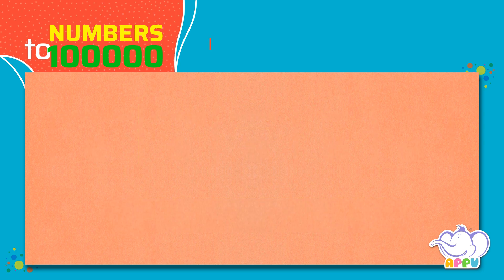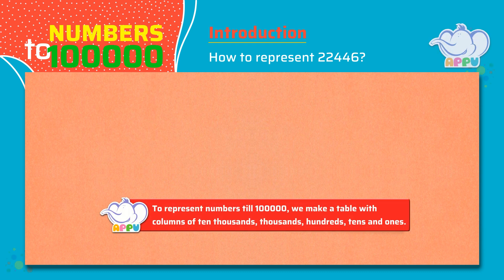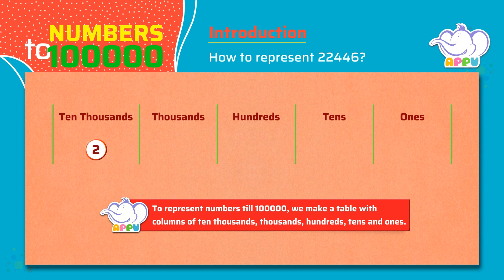Let's see one example. How to represent 22,446. To represent a 5-digit number, we make a table of ten thousands, thousands, hundreds, tens, and ones. So, 22,446 can be represented as two ten thousands, two thousands, four hundreds, four tens, and six ones.